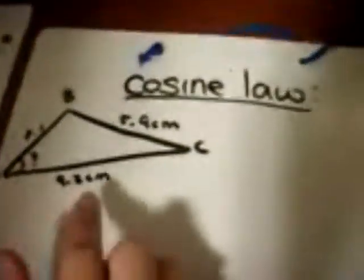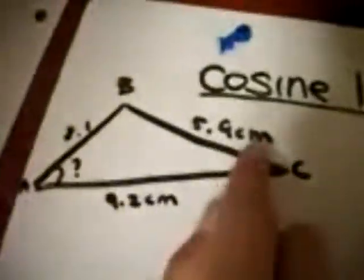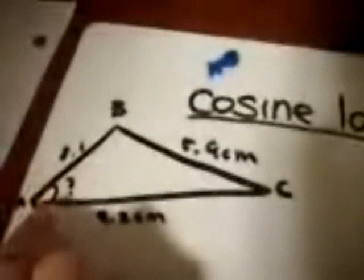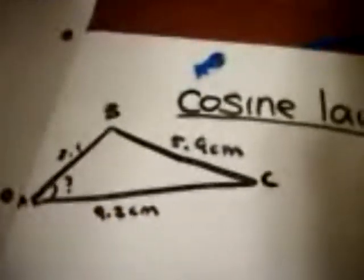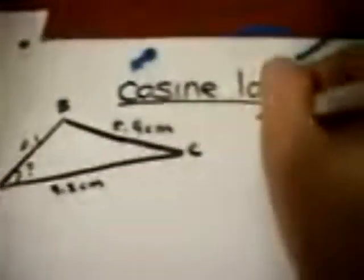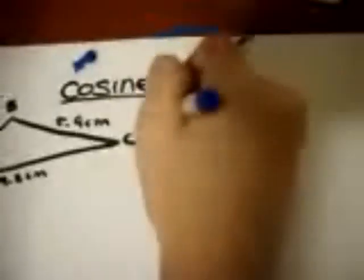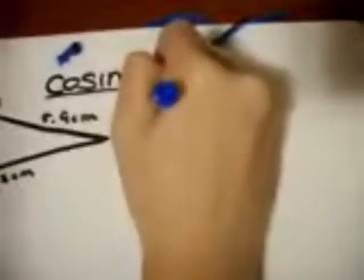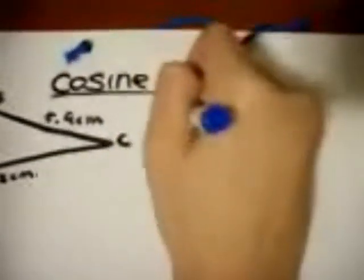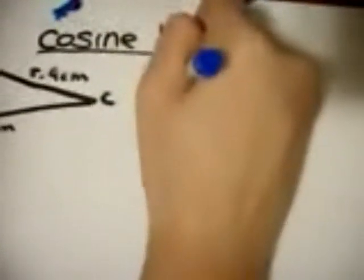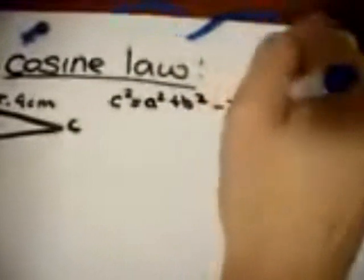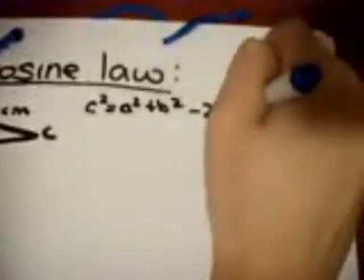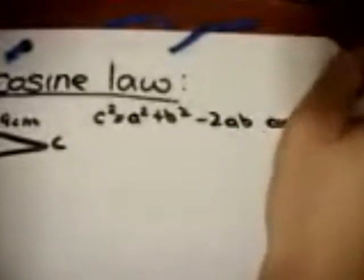So for our second example, we have three sides but no angle. So we first start with stating the formula, which is C squared equals A squared plus B squared minus 2AB cosine C.